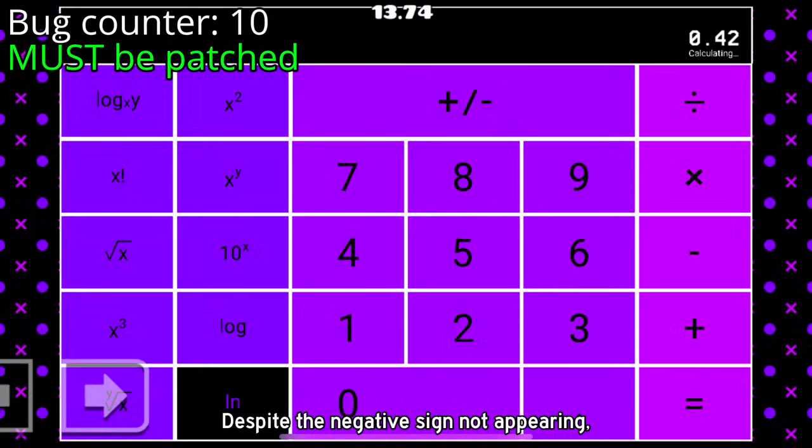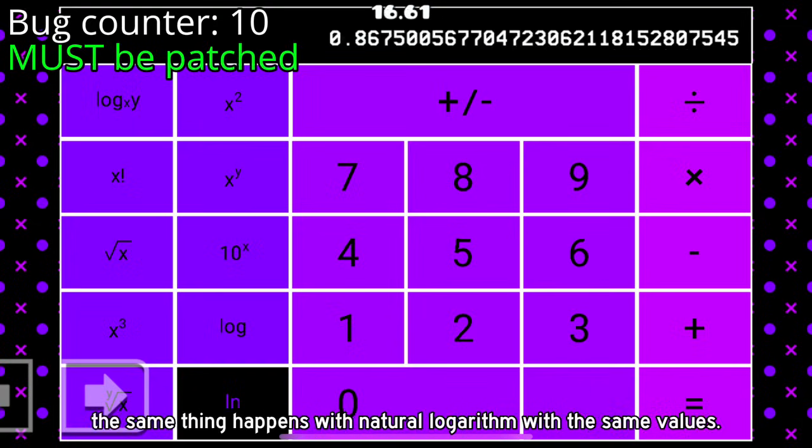I mean, why? Despite the negative sign not appearing, the same thing happens with natural logarithm with the same values.